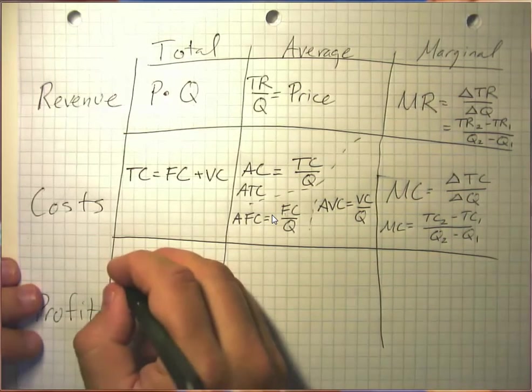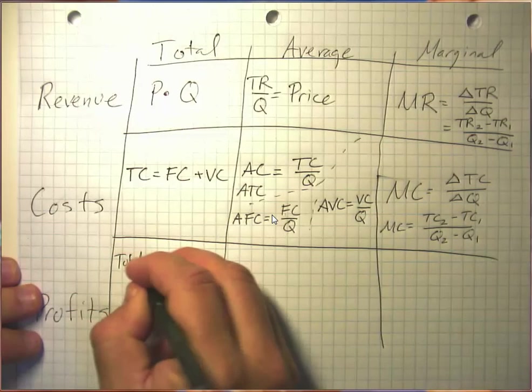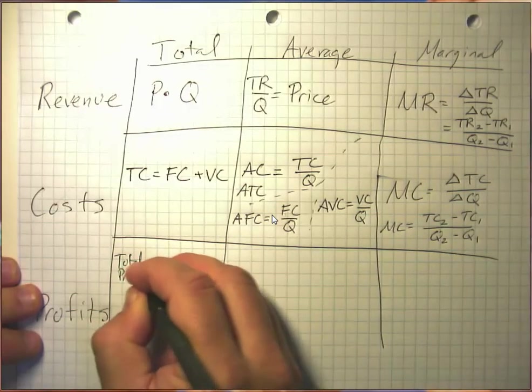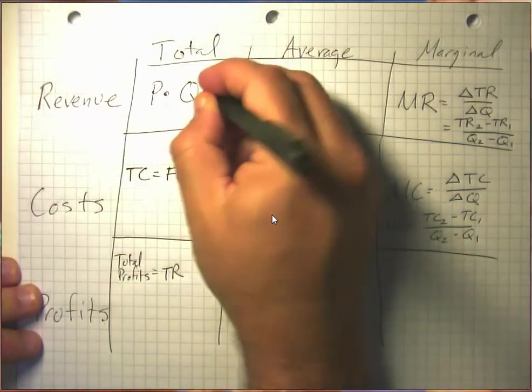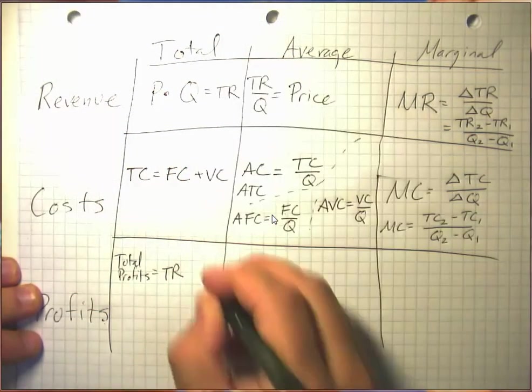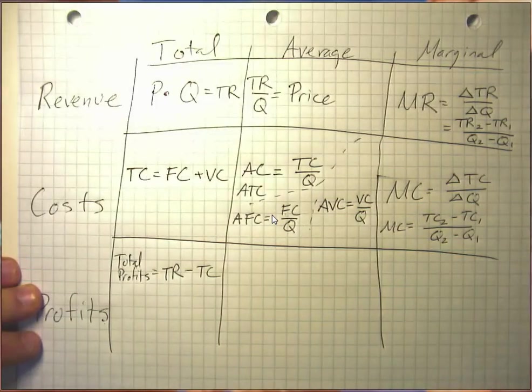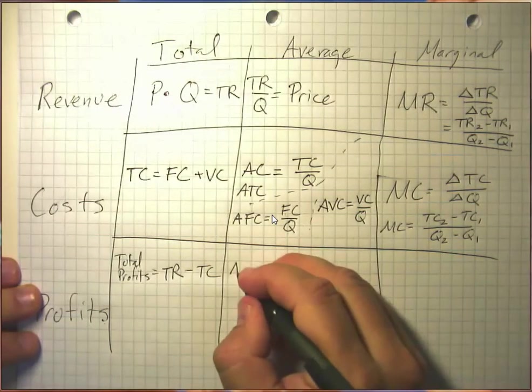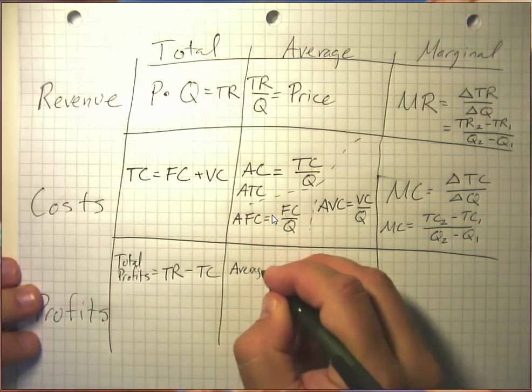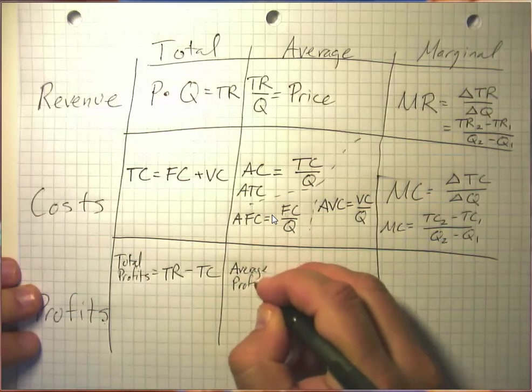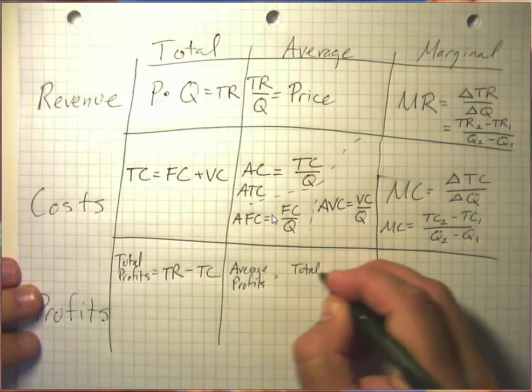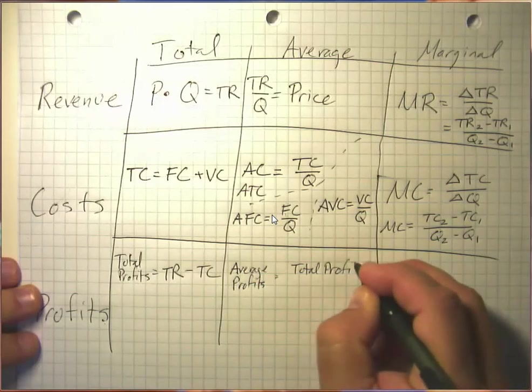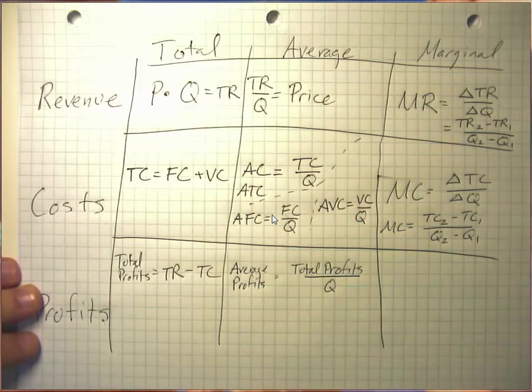Profits. Well, total profits equals total revenue minus total cost. And average profits equals total profits over the total quantity that we produced.